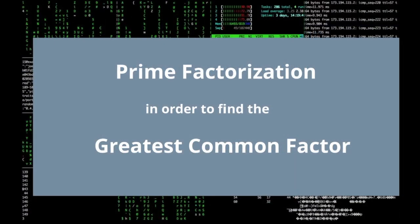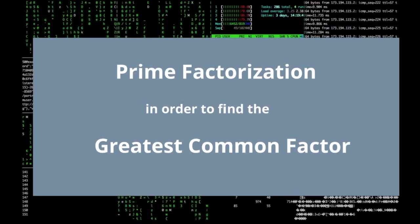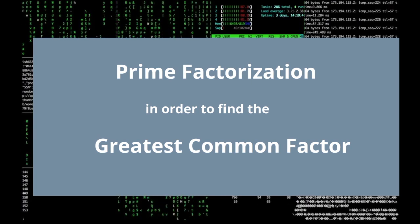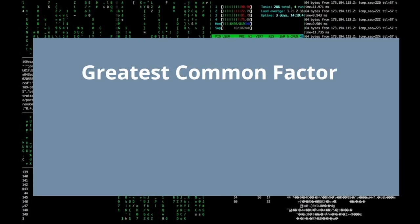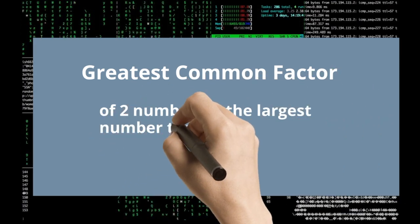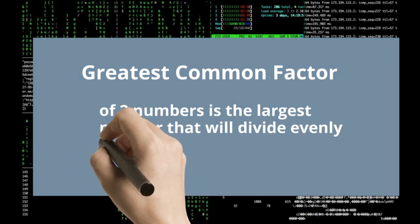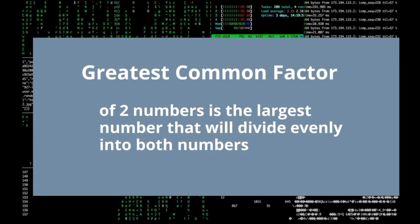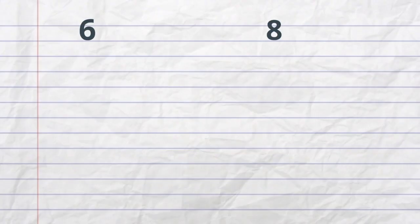Let's learn how to use prime factorization in order to find the greatest common factor of 2 or more numbers. The greatest common factor of 2 numbers is the largest number that divides evenly into both of these numbers. So let's get started. Let's find the greatest common factor of 6 and 8.